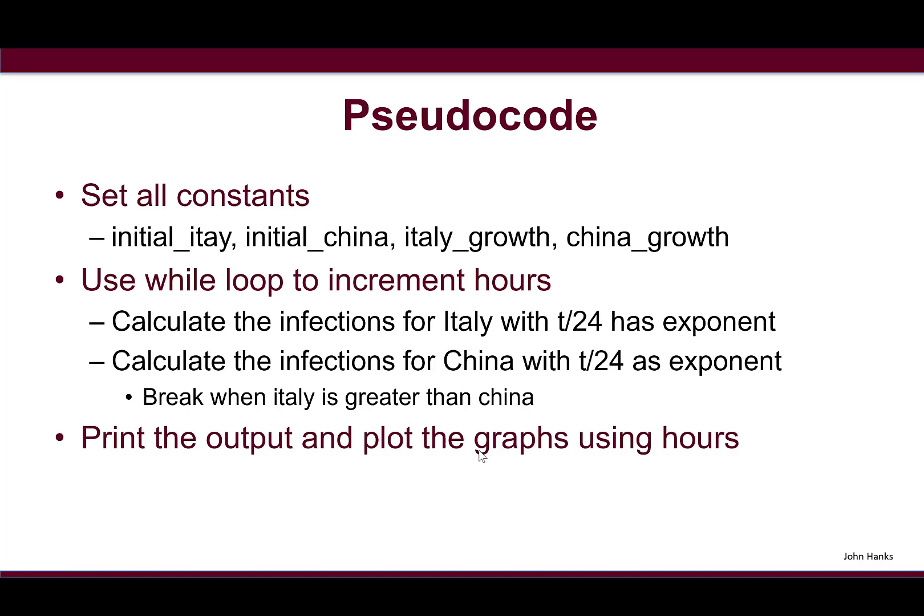Now that we know what the answer is and our model could work properly, how will we implement this in Python? First, we're going to set all the constants, then we want to sit in a while loop and increment the hours, then calculate the infections for Italy and China where t/24 is the exponent.